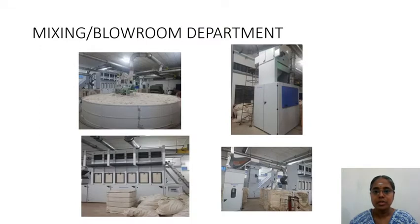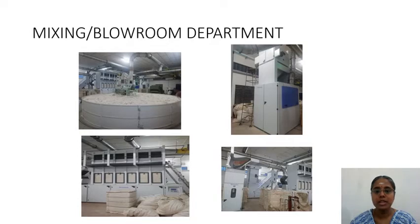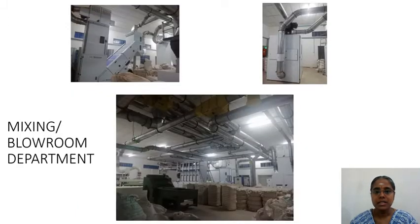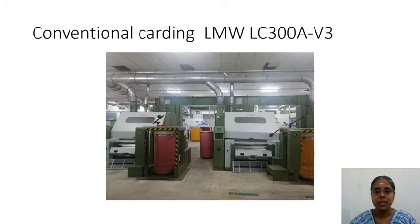To start with, we will look at the various departments in the spinning mill — the production departments especially. The first picture shows the mixing and blow room departments, where mixing, cleaning, and bale laying down takes place. This is the first production department: the blow room.